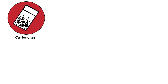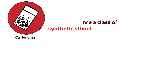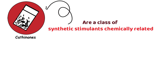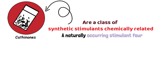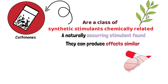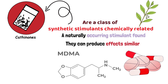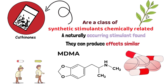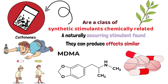Cathinones are a class of synthetic stimulants chemically related to cathinone, a naturally occurring stimulant found in the khat plant. They can produce effects similar to amphetamines and MDMA, including increased energy and euphoria.